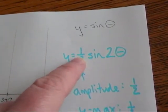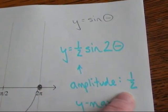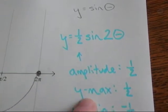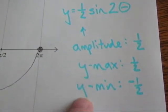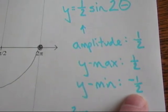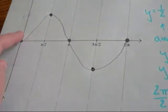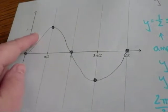The one half here affects my amplitude, tells me that my amplitude is one half. That means that my y maximum will be at one half, my y minimum will be at negative one half. So I'm going to need to add those labels over here on my y axis.